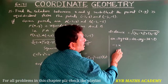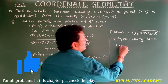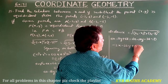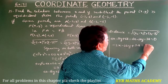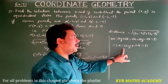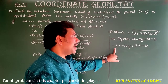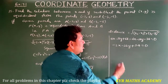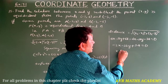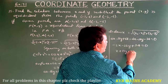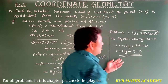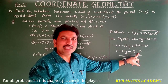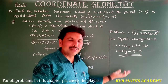Dividing both sides by minus 2, we get x plus 13y minus 17 equals 0. So this is the relation between x and y: x plus 13y minus 17 equals 0. Have you understood clearly? Note it down.